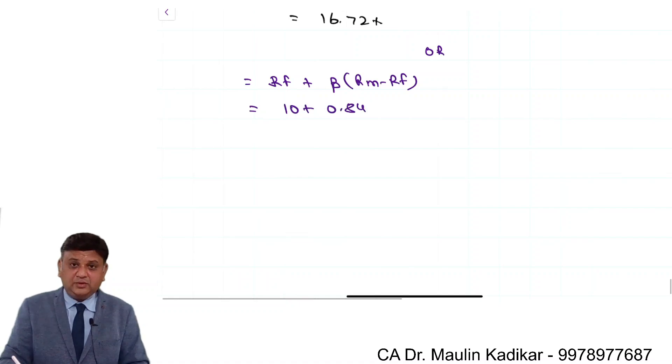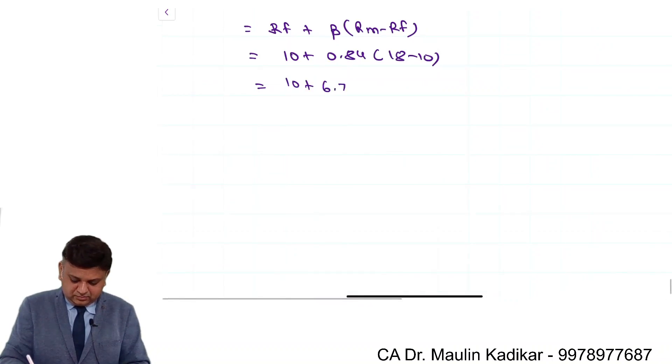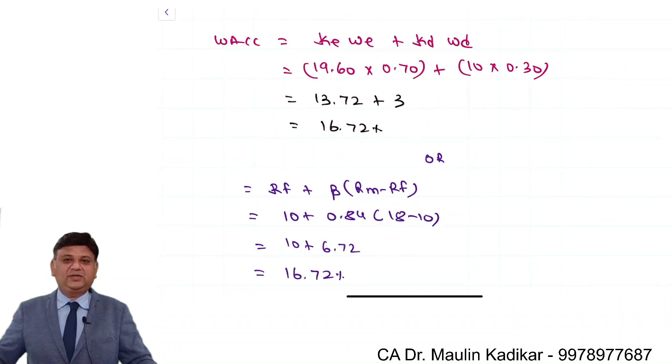What is the risk-free rate of return? It is 10, beta is 0.84, return on the market portfolio is 18 minus 10. So 0.84 into 8 is 6.72. 16.72 percent is the required adopter.